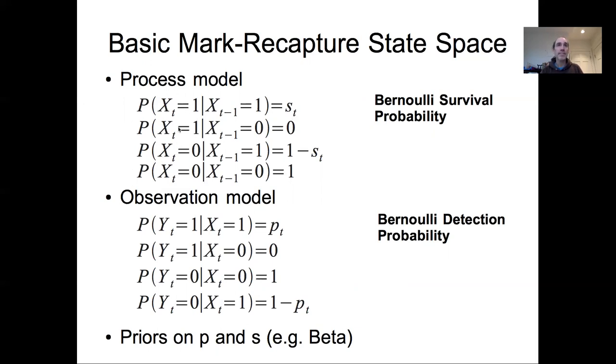By contrast, the probability of being alive right now when we know you were dead in the past is zero. It's impossible to come back to life. The probability of being dead now given that you were alive in the past is one minus that survival probability, and the probability of being dead now given that you were dead last time is 100%. Again, we don't have zombie individuals.